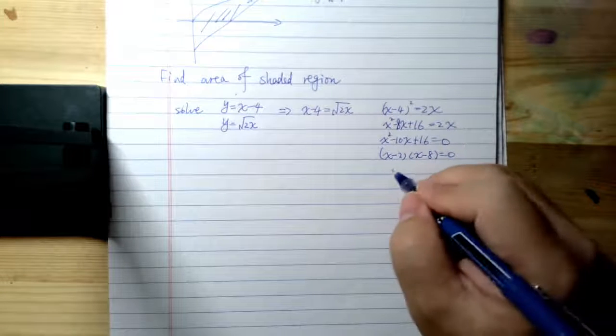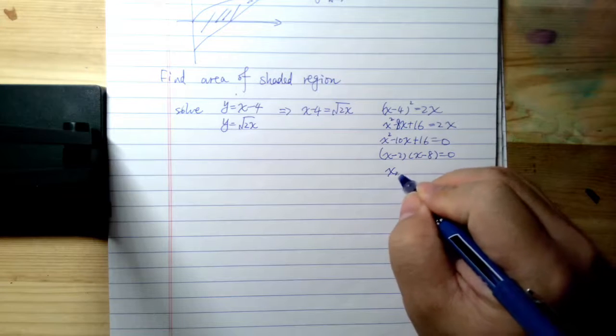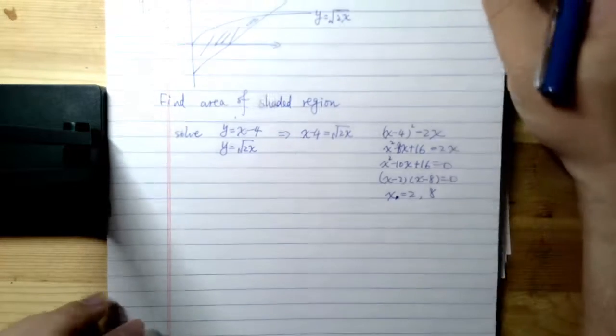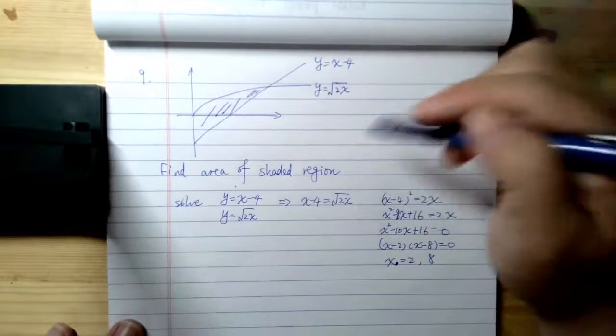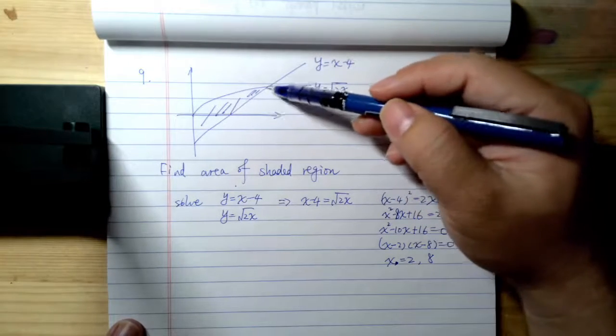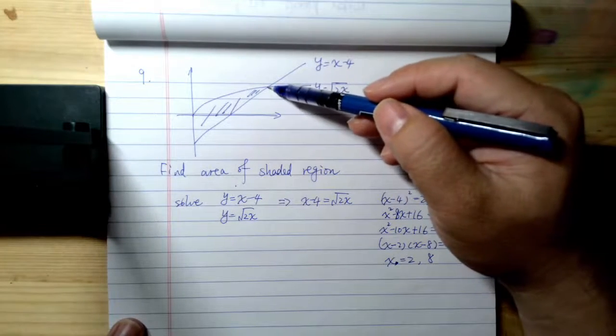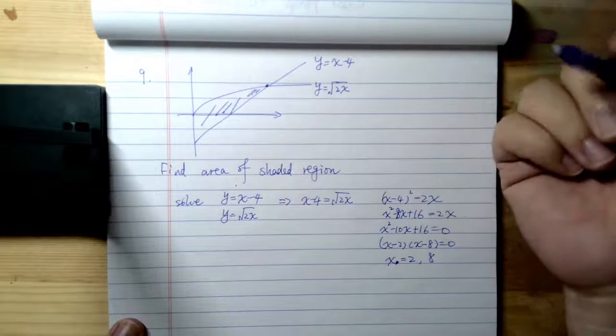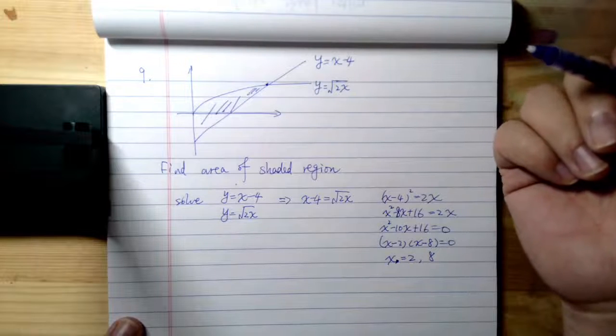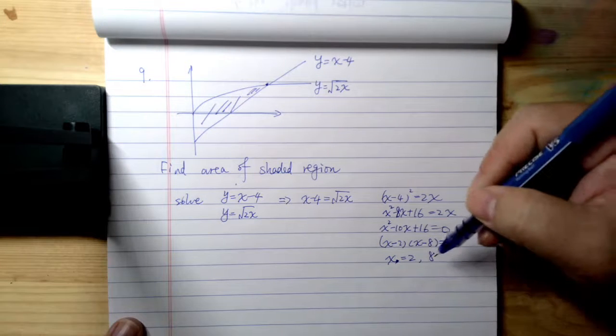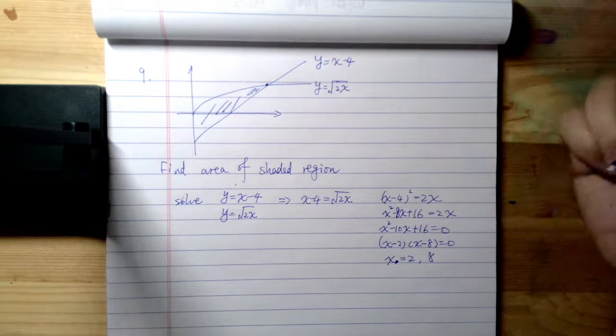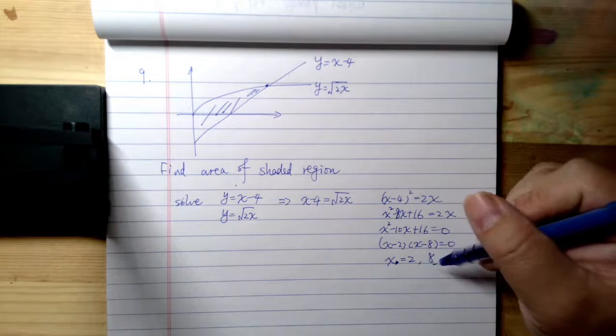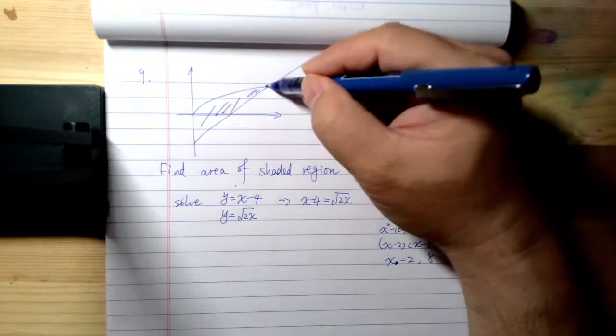Turns out we can have x minus 2 and x minus 8 equals 0. So basically we can solve that x equals 2 or 8. But one thing you need to be careful is, if you look at this graph we can solve for the intercept, and the question is which one, right? Is it x equals 2 or x equals 8? It's going to be x equals 8.